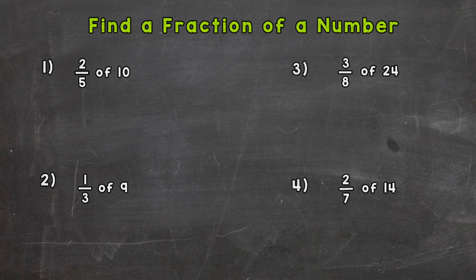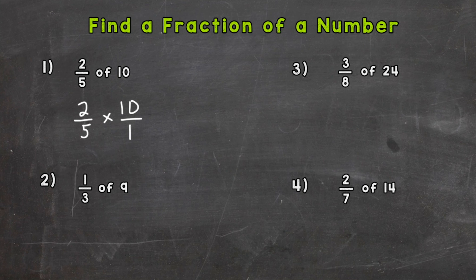For number one we have two-fifths of ten. Whenever we're taking a fraction of a whole number, a fraction of a mixed number, or even a fraction of a fraction, we can turn this into a multiplication problem. So two-fifths, and I'm just going to change the 'of' to a multiplication sign. Then I put my whole number over 1, giving me a numerator and a denominator so I'm able to multiply straight across.